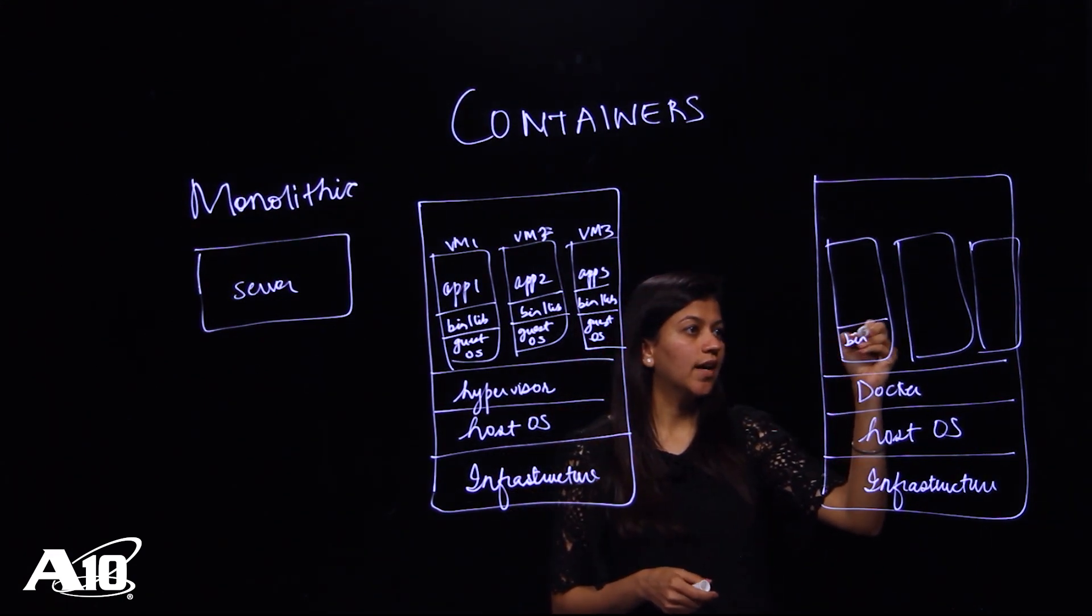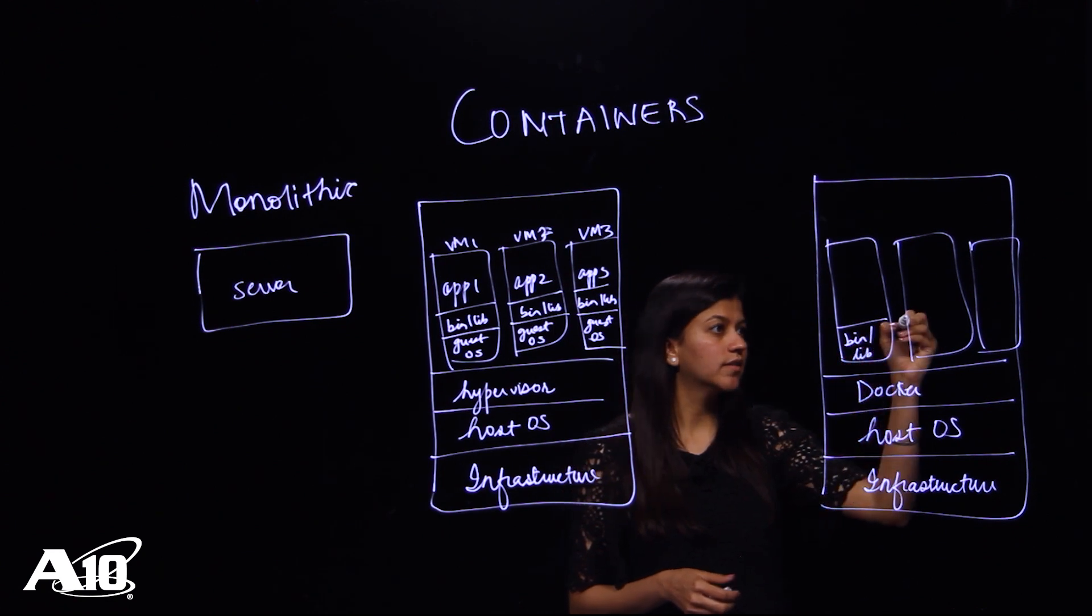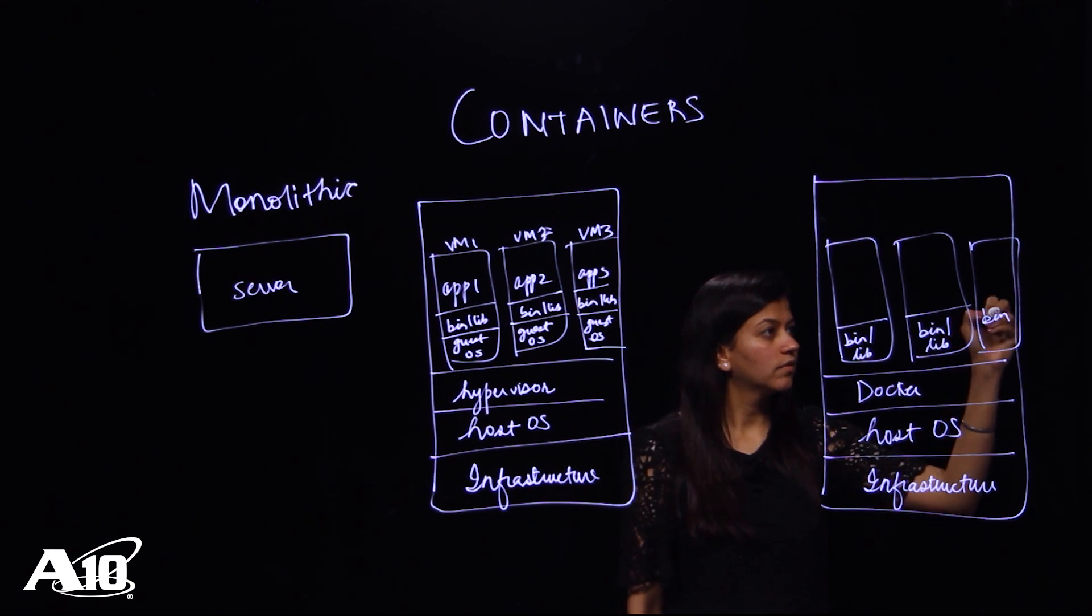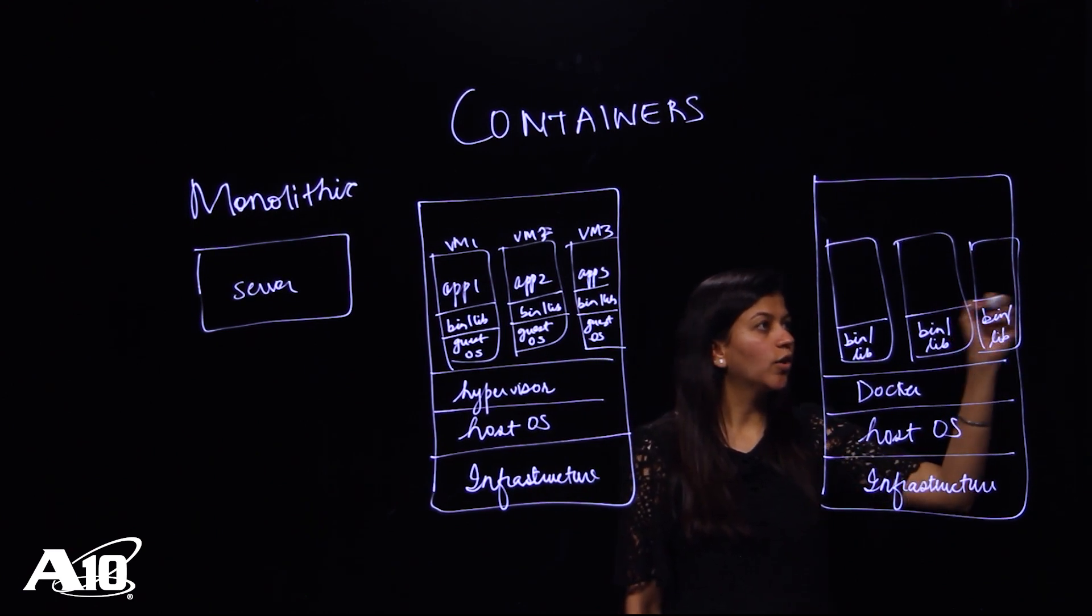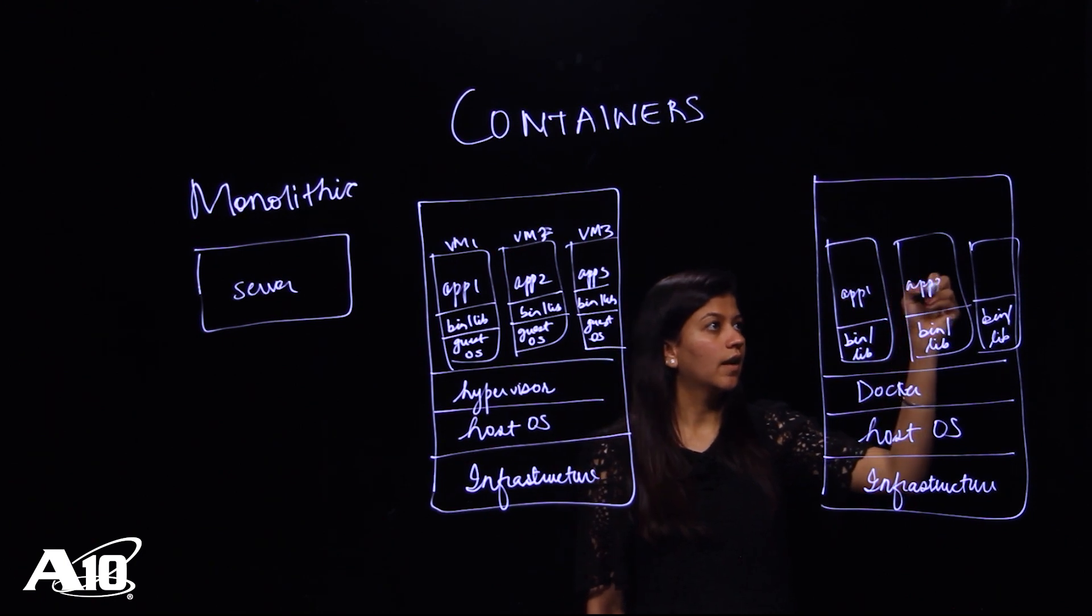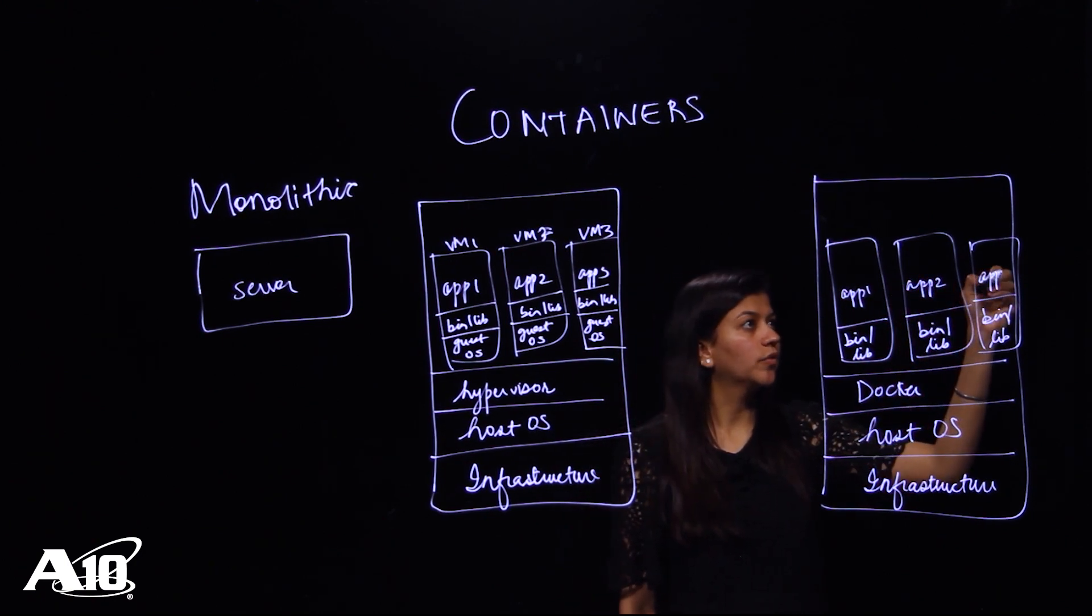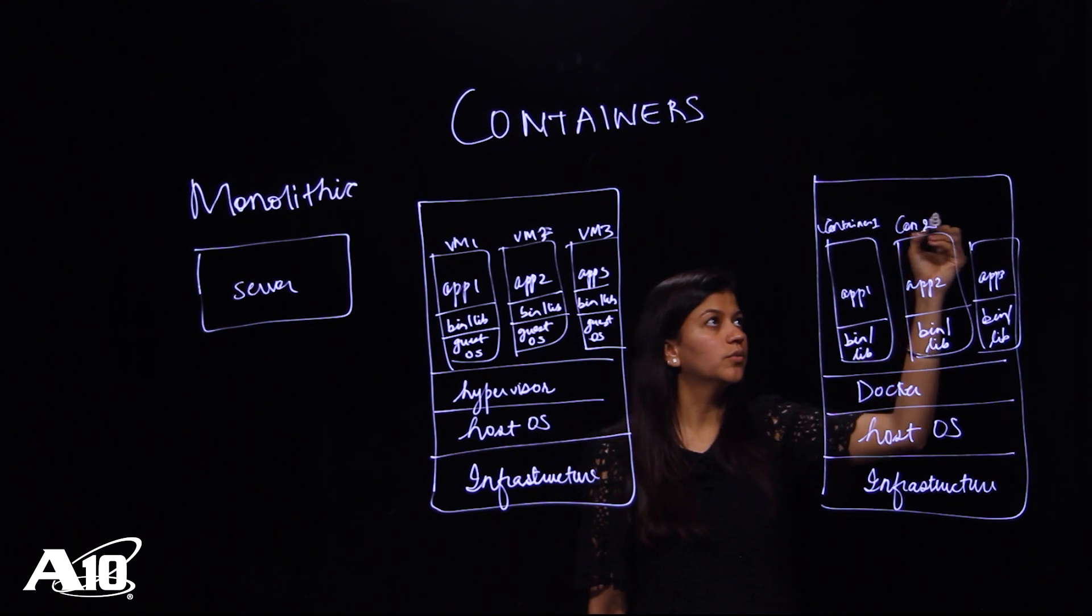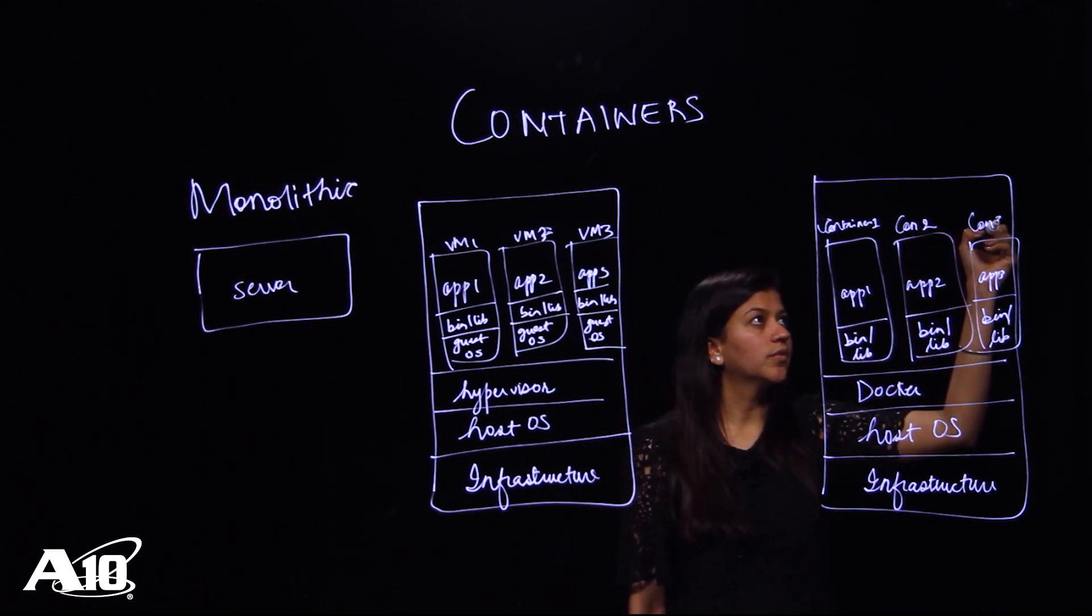You directly have your binaries and libraries, and on top of this now you have your apps: app 1, app 2, app 3. So this is my container 1, container 2, and container 3.